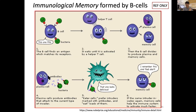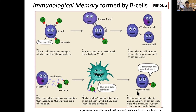Those plasma cells produce antibodies that attach to the current type of invader, and they proliferate to generate many many antibodies. Because of these antibodies, phagocytes prefer to eat these marked pathogens. Simultaneously, memory cells remember this encounter, and when the same intruder comes in the future, the memory cells help the immune system activate and respond rapidly.